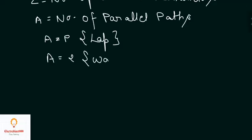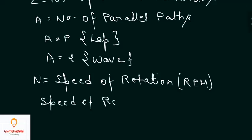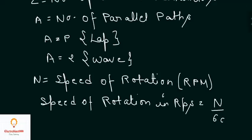And A is equal to 2 for wave winding — we already discussed this. Let N be the speed of rotation in RPM. The speed of rotation in RPS is given by N divided by 60.